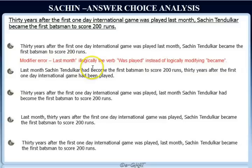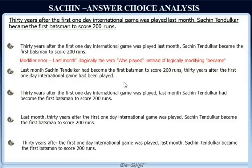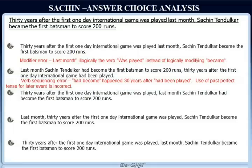Choice B reads: 'Last month, Sachin Tendulkar had become the first batsman to score 200 runs 30 years after the first one-day international game had been played.' This sentence corrects the modifier error because 'last month' is now associated with the action of becoming the first batsman to score 200 runs. But it messes up the verb sequencing — both events are in past perfect tense, which is not correct because we cannot use past perfect for the later event. Furthermore, 'had been played' is unnecessarily wordy. So this tense is also incorrect, and choice B is wrong.